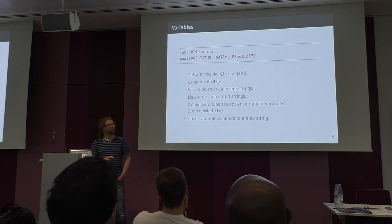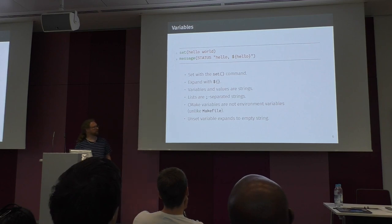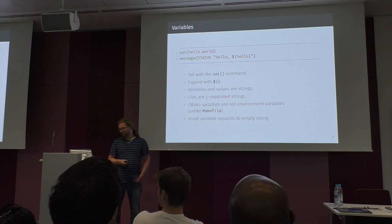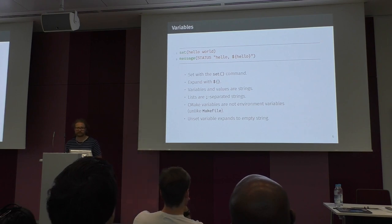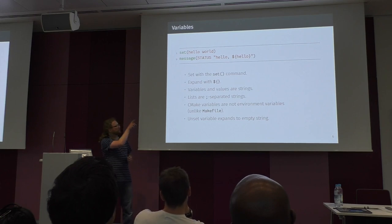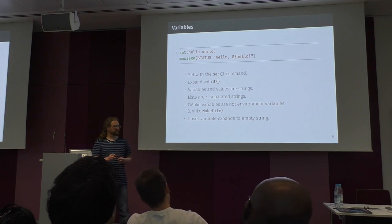We have variables, set with the set command, and expanded with the $curly brace syntax. In CMake, the only data type is a string, and there's a convention that lists are semicolon-separated strings. Environment variables are not CMake variables — unlike in make files where a variable and an environment variable are the same. If a variable is not set and you expand it, it expands to an empty string, which can lead to surprises. It's therefore better to avoid variables.